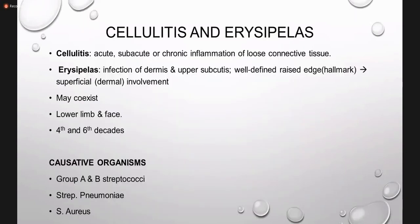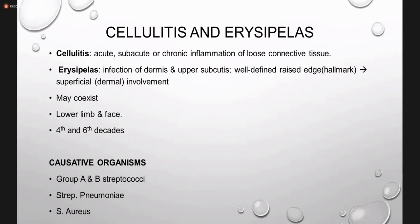The third bacterial skin infection is cellulitis and erysipelas. Cellulitis is a superficial infection — acute, subacute, or chronic inflammation of loose connective tissue — while erysipelas is deeper, involving the dermis and upper subcutaneous structures. Erysipelas is well defined with a raised margin and dermal involvement. In one patient, erysipelas and cellulitis can co-exist. The most common site of cellulitis is the lower limb; for erysipelas it is the face. It occurs in middle-aged patients; causative organisms include Staphylococcus aureus and Streptococcus pneumoniae.